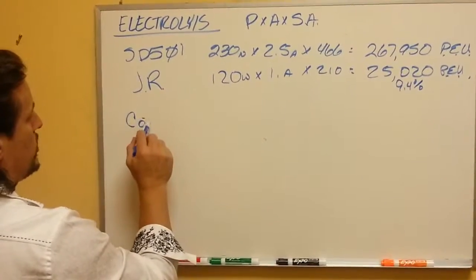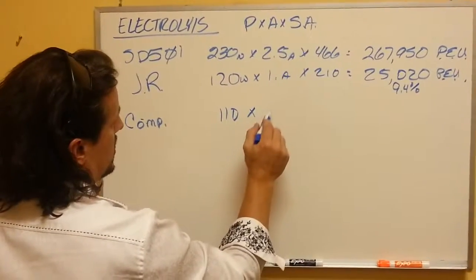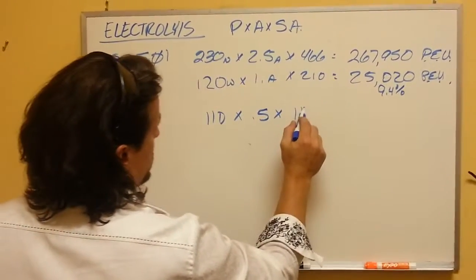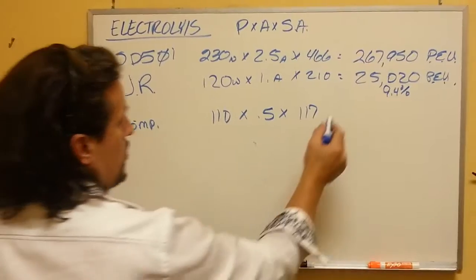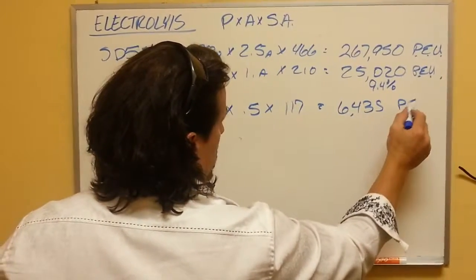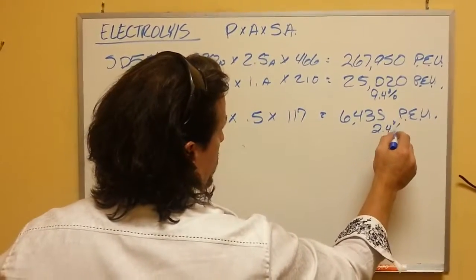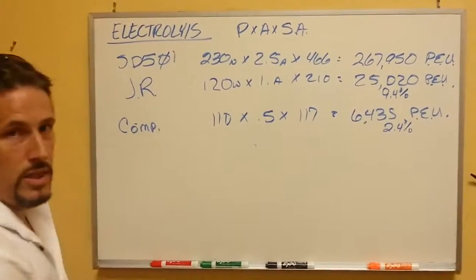However, if you take the average competitor's machine, they have 110 watts times a half amp times 117 square inches of plate space, or 6,435 PEUs. That's only 2.4% of the power of the SD501.